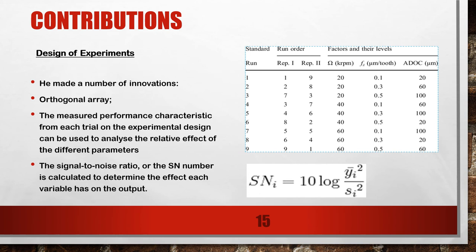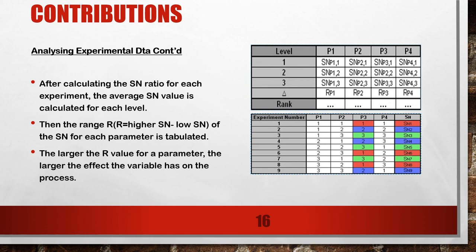Design of experiments. Taguchi's framework of design of experiments is idiosyncratic and often flawed. He made a number of innovations. Orthogonal Array is used to treat the design process such that quality is built into the product during the product design stage. The measured performance characteristic from each trial can be used to analyze the relative effect of different parameters. The signal-to-noise ratio (SN number) is calculated to determine the effect each variable has on the output. Here is an example of an orthogonal array and how the signal-to-noise ratio is calculated.